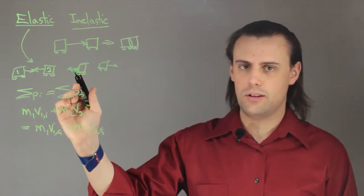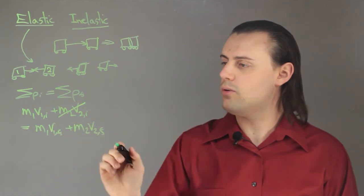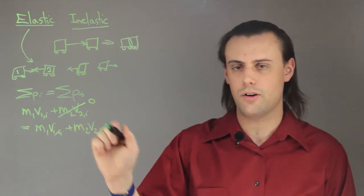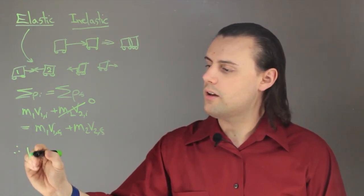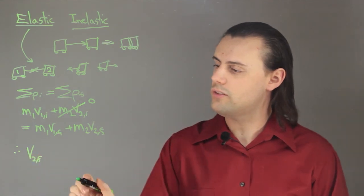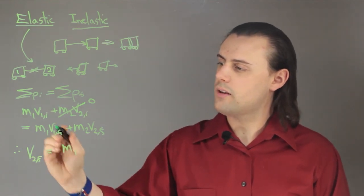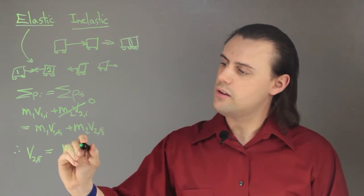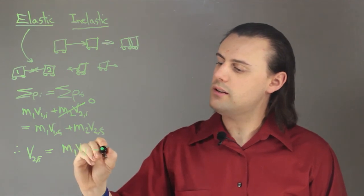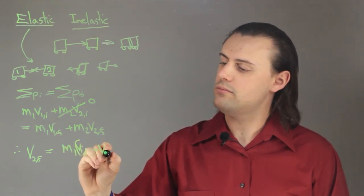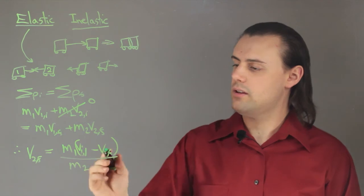So, if one of these cars is initially not moving, say car 2 is initially not moving, then this is going to be equal to zero because the velocity of car 2 is initially zero. Therefore, the final velocity of car 2, if the momentum is conserved, is going to be equal to mass of car 1 times its initial velocity minus its final velocity divided by mass 2, to use simple algebra.